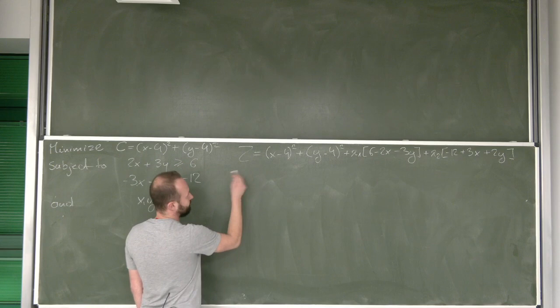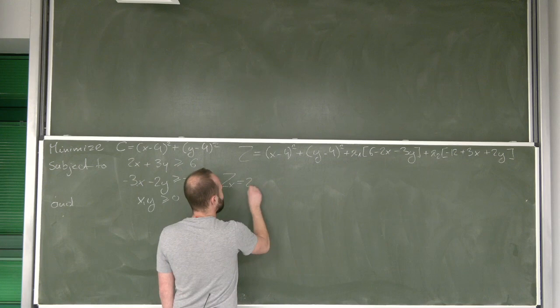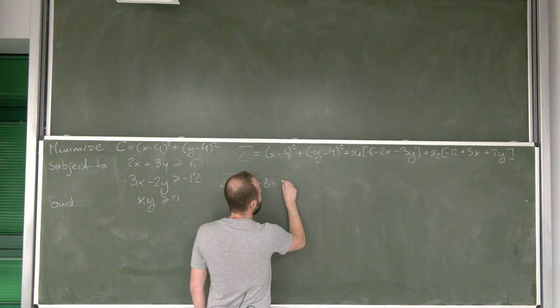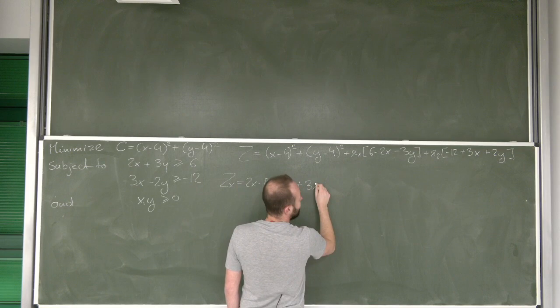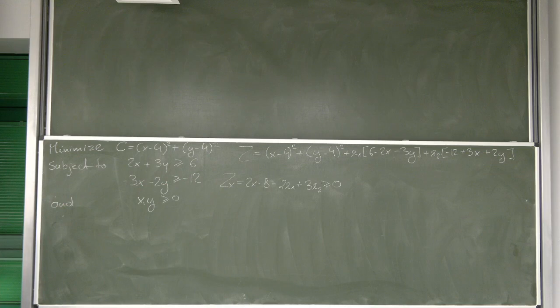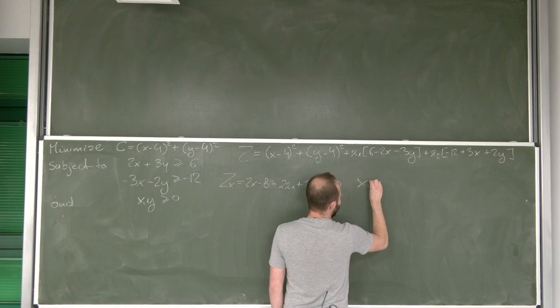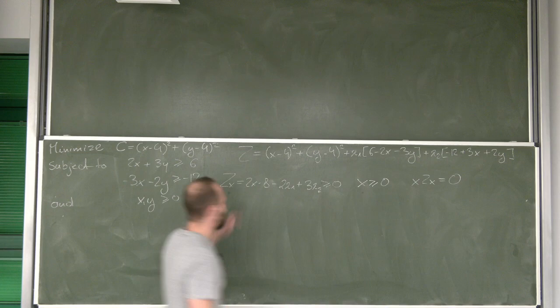Okay, and so first thing we need to do is to differentiate this function with respect to x. We get that this is 2x minus 8 minus 2 lambda 1 plus 3 lambda 2. And of course this now needs to be bigger or equal to 0. Of course, we also need to add that x must be bigger or equal to 0 and that due to complementary slackness at least one of them needs to be equal to 0.